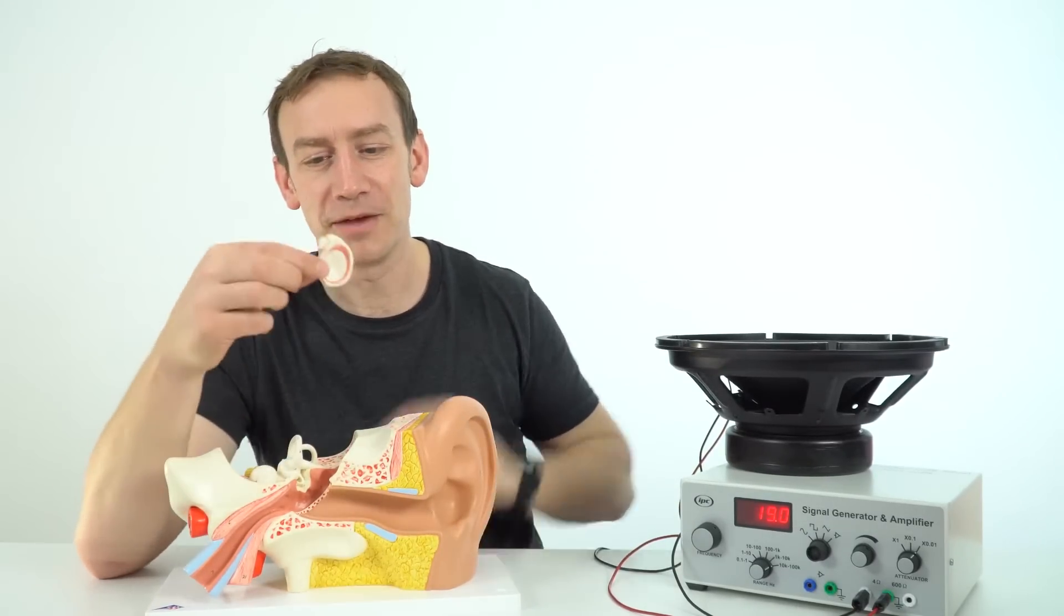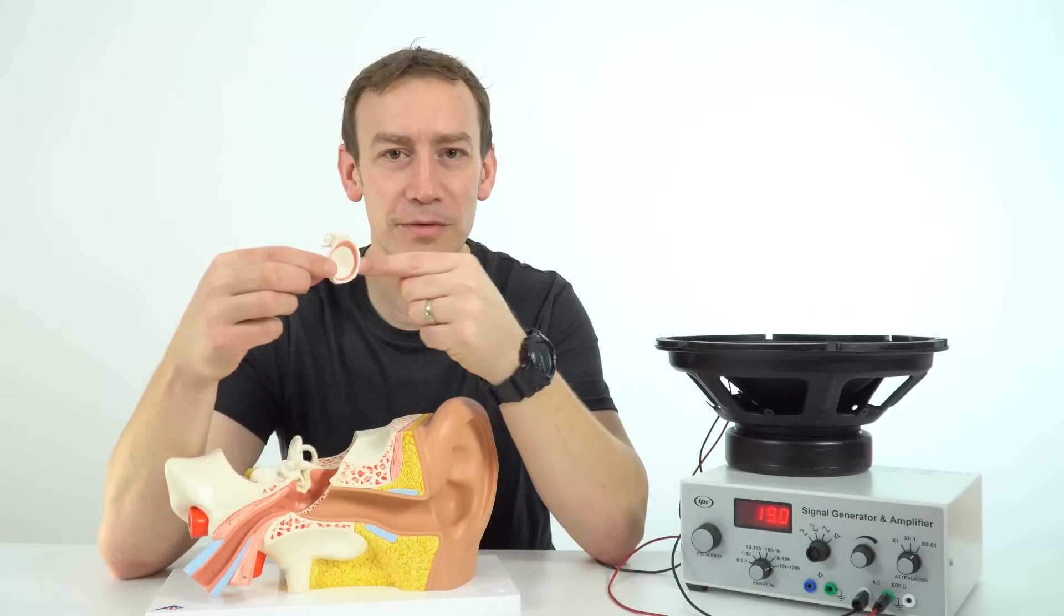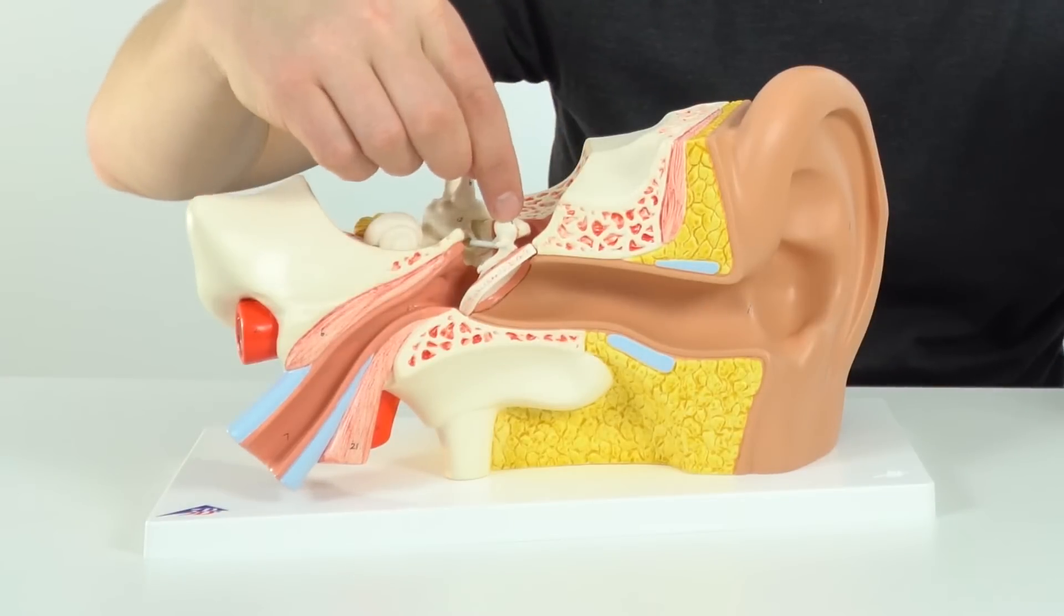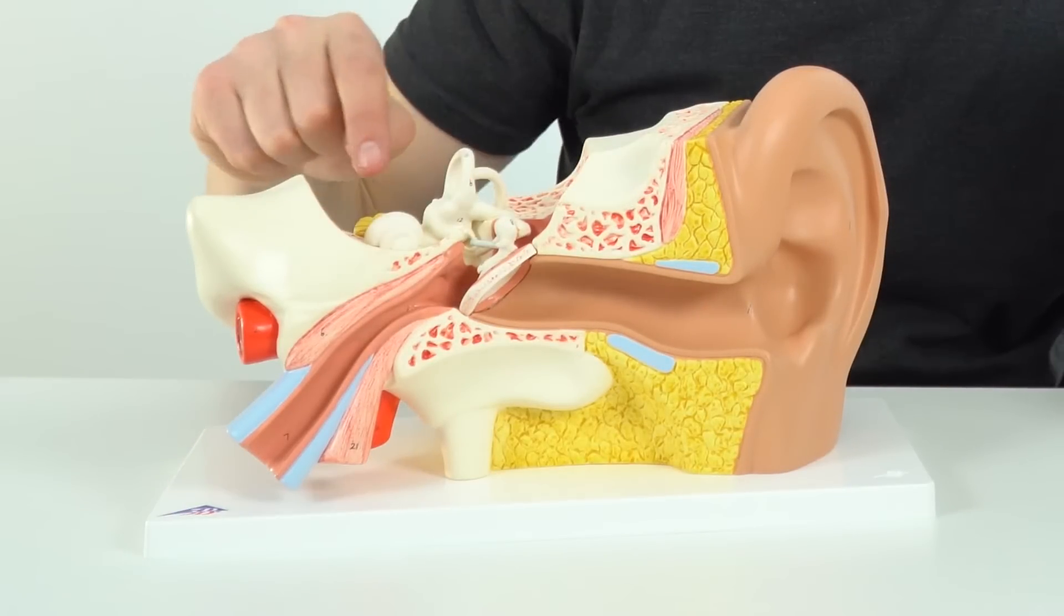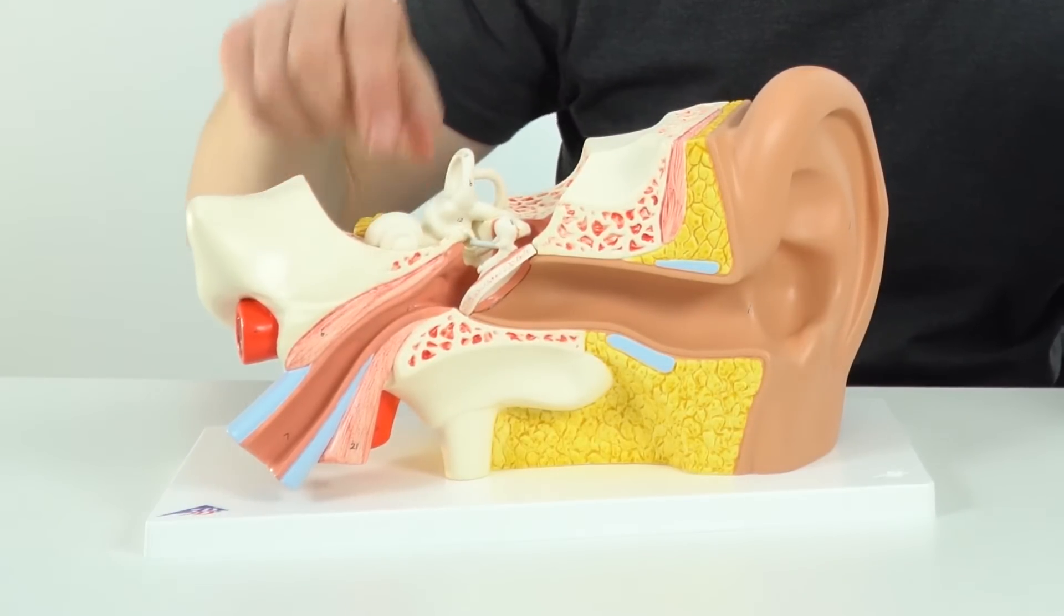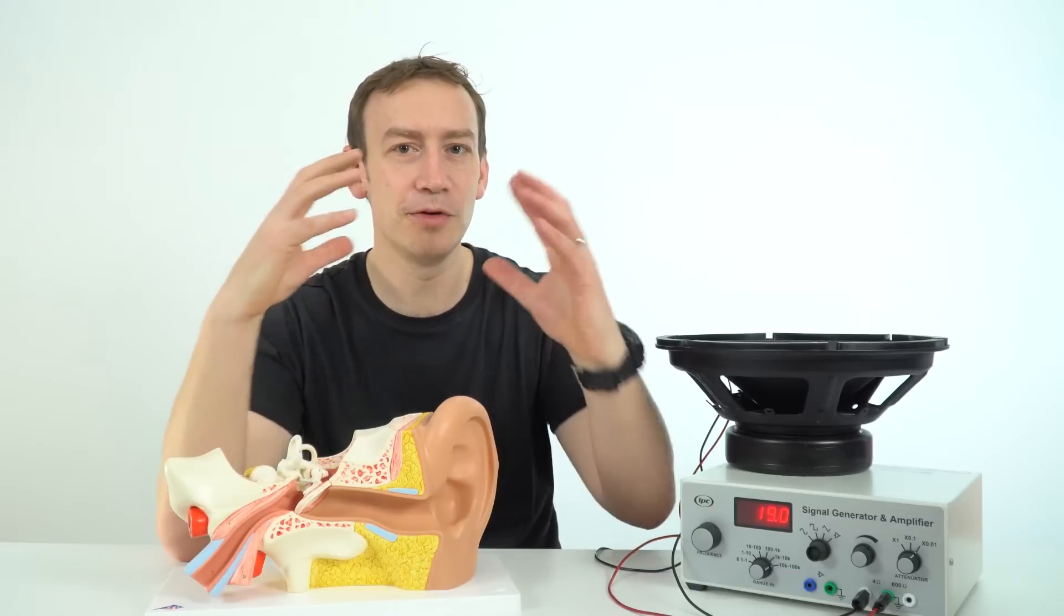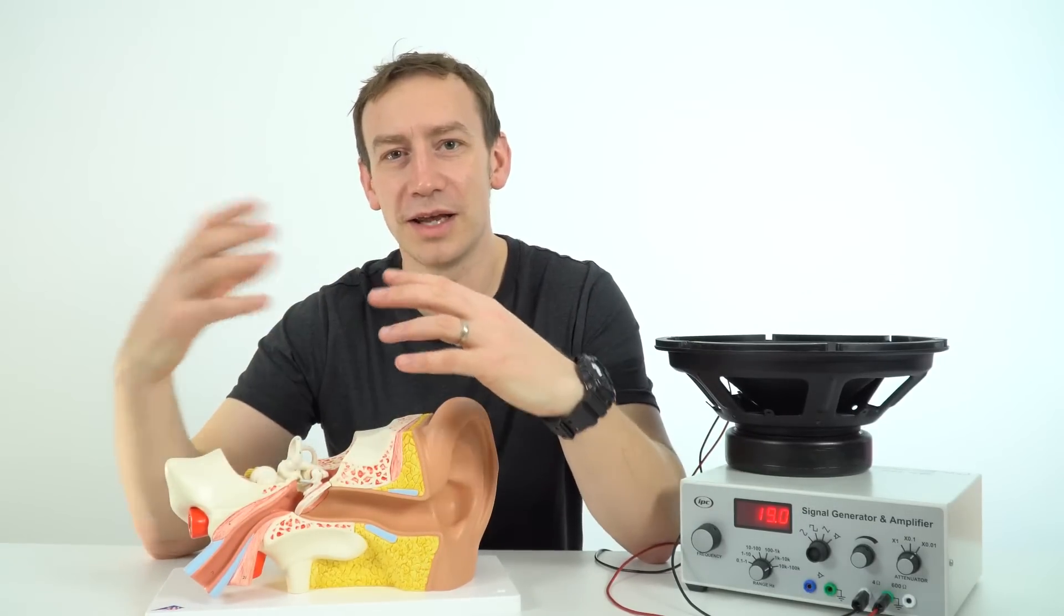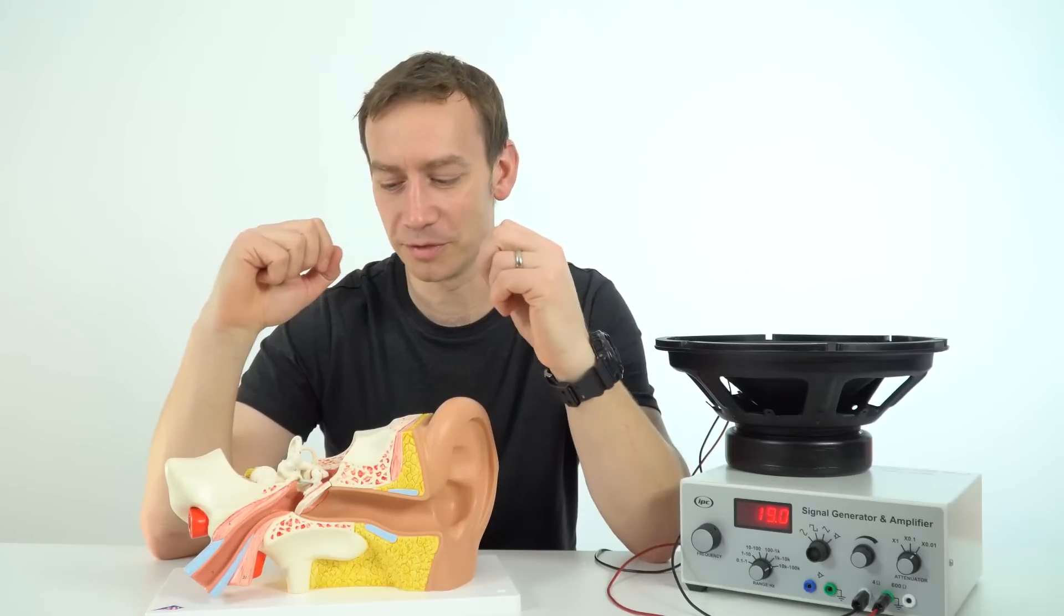But what we're doing is effectively this thing here it's moving back and forwards as the sound wave comes in. It then passes a signal through a series of bones to the auditory nerve and this then converts that mechanical movement into an electrical signal which it then sends to the brain and then our brains interpret what that noise might be.